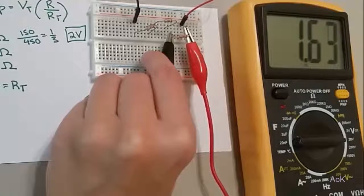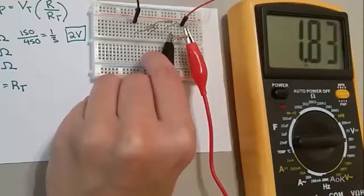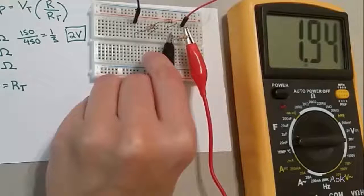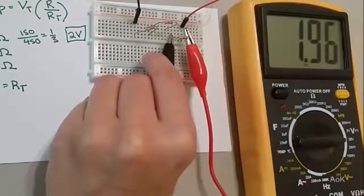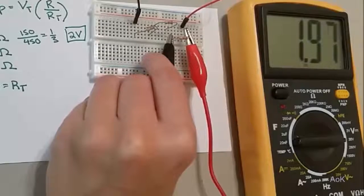You may have to wait a little bit for the multimeter to settle down on a value. It's settling right at 1.95. That's really close to the two volts that we estimated.